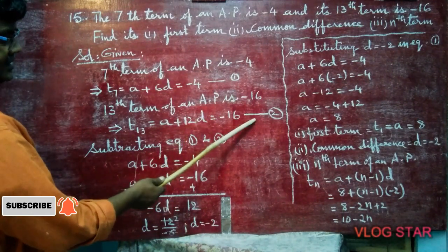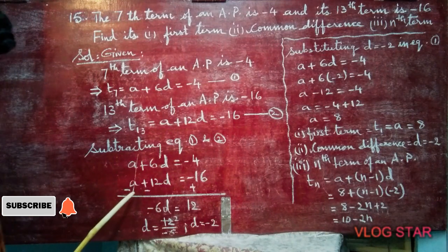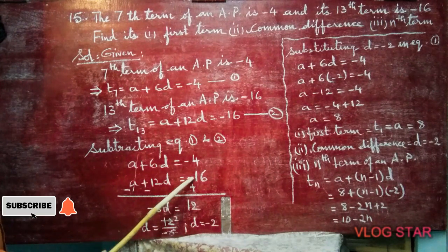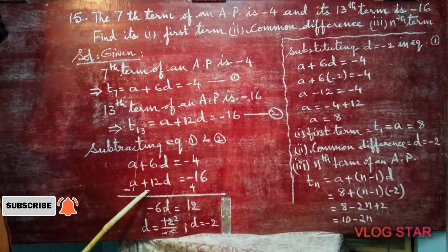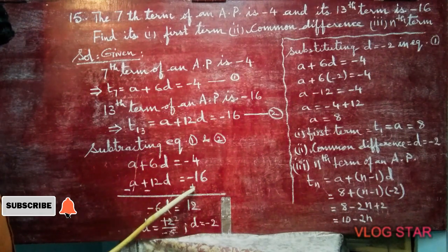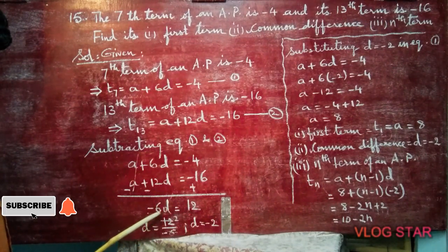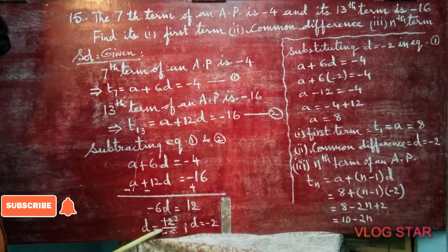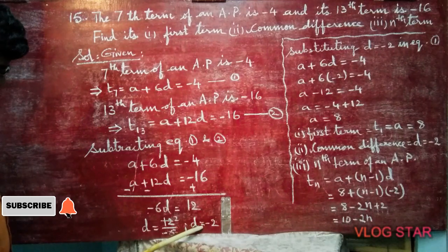Now we have two simultaneous equations. Subtracting equation 1 from equation 2, the second equation's signs change: plus becomes minus, minus becomes plus. The A terms cancel. Minus 12D plus 6D gives minus 6D. So minus 6D equals 16 minus 4, which is 12. To find D: minus 6D equals 12, so D equals 12 divided by minus 6, which gives D equals minus 2.